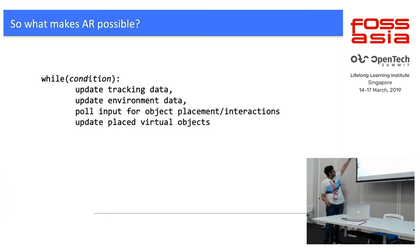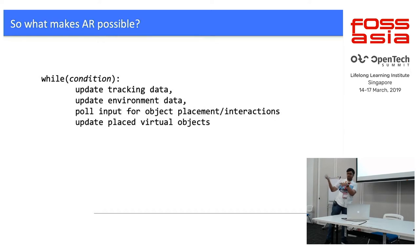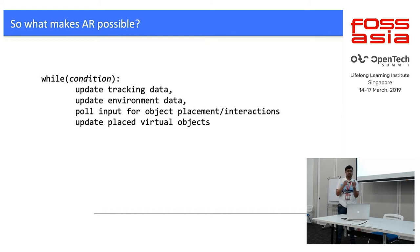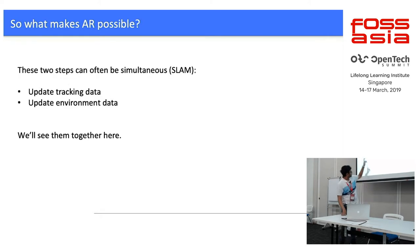Summarizing AR, these four steps could be basically an algorithm for what AR does internally: while some condition is true, you update the tracking data — the position of the user and rotation of the device — then update environmental data like lighting conditions and scale, check for any previous updates, and finally update the placed virtual objects' positions. The first two steps are normally simultaneous and are called SLAM algorithms, which most AR libraries use.